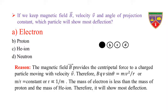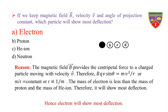R is inversely proportional to M, the mass of the particle. The mass of the electron is less than the mass of the proton and helium ion. Therefore, it will show the most deflection, because the radius of the curved path is inversely proportional to mass. Neutron cannot be deflected as it is a neutral particle. Hence, the electron will show the most deflection.